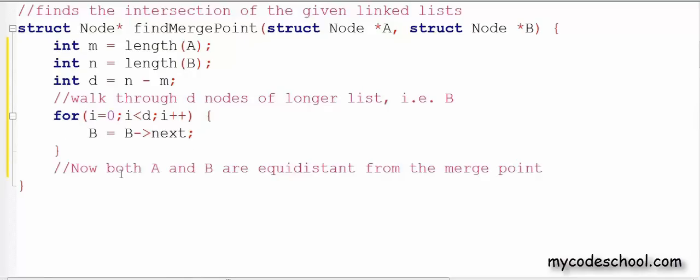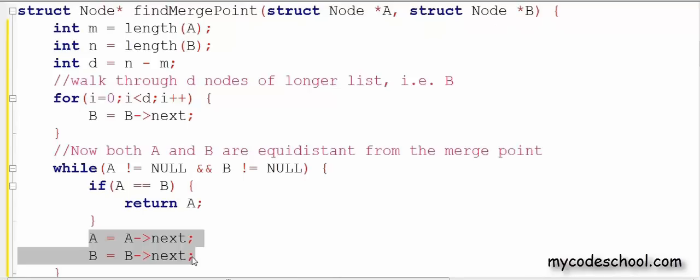So now both A and B are equidistant from the merge point. Therefore, we can traverse both the lists until they both hit null. In every iteration, we check if A and B point to the same node, which would mean that it is the merge point and hence we can simply return that node. Otherwise we can simply advance both the pointers to the next node. So this code would find the merge point if it exists.